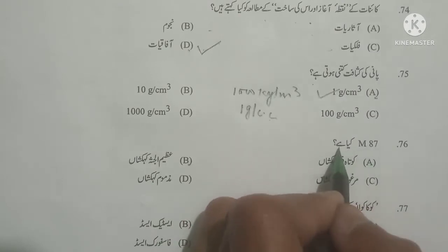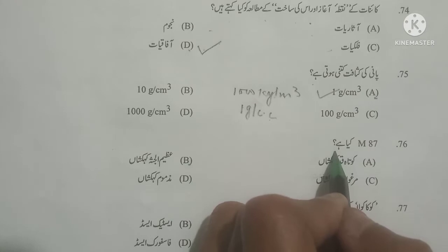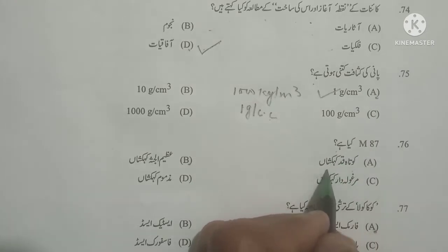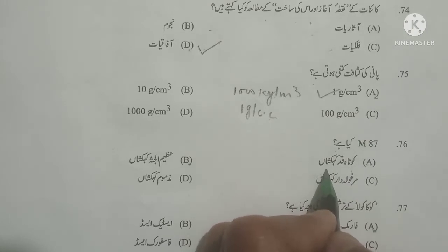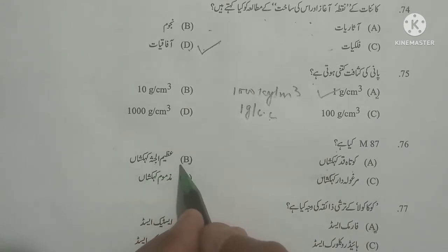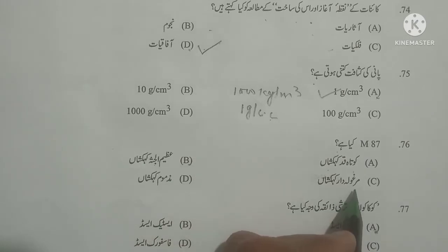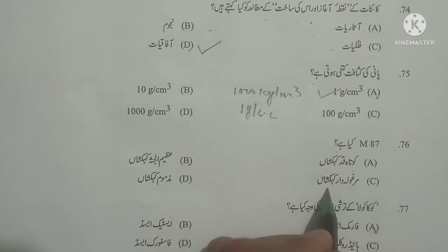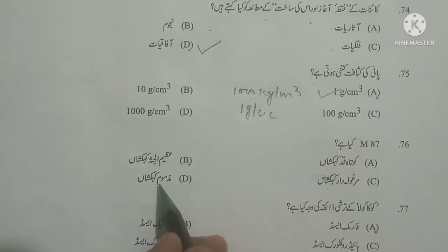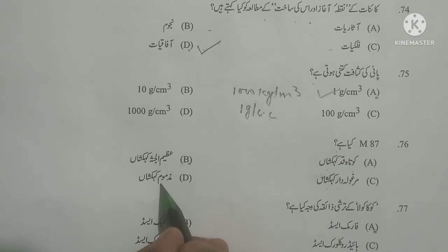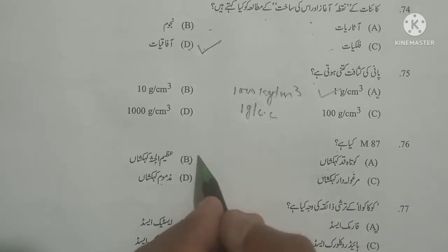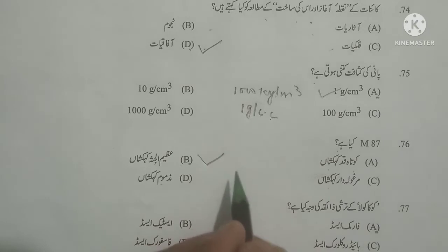Next question: M87 kya hai? What is M87? Options given: kotakad kahekesha means short galaxy, azimul jashah kahekesha means big galaxy, galaxy margola dar kahekesha means milky way galaxy, mzmum kahekesha means infamous galaxy. M87 is a great/giant galaxy — azimul jashah kahekesha is the correct answer.